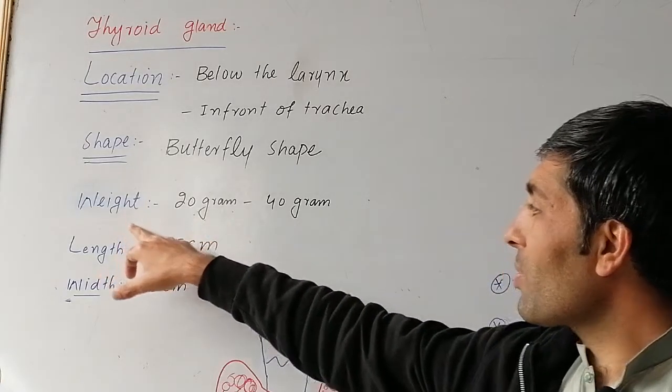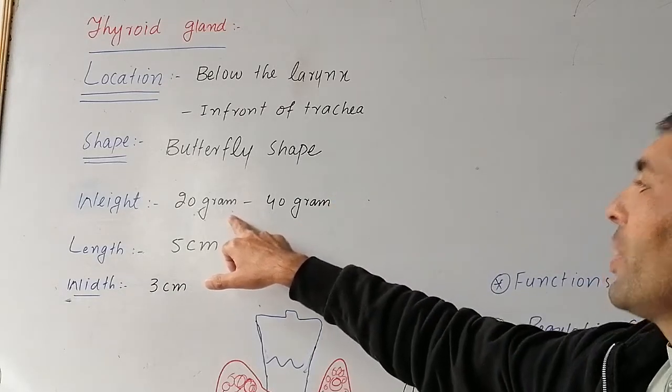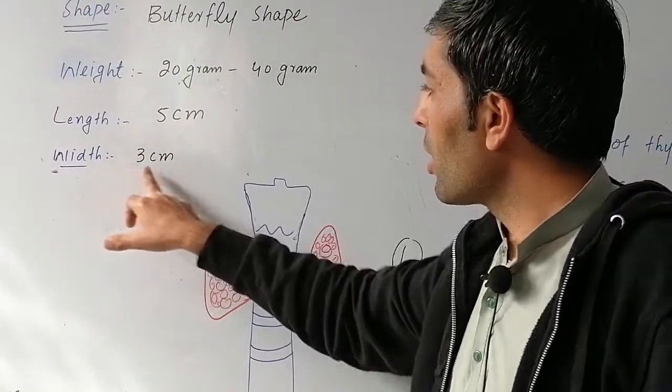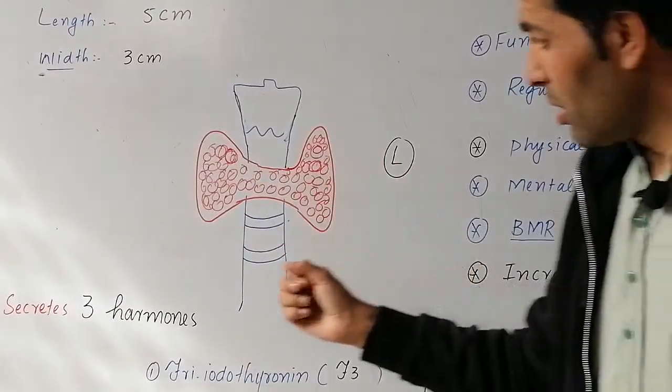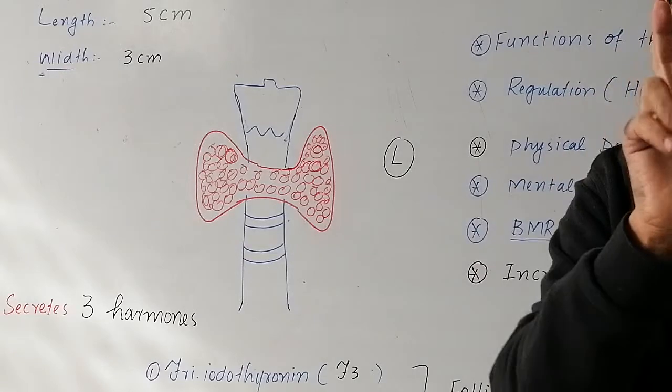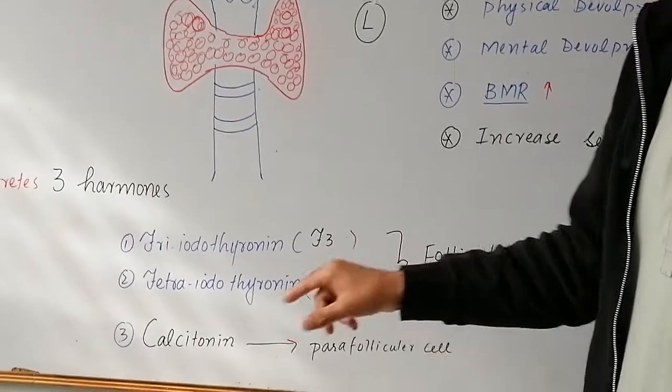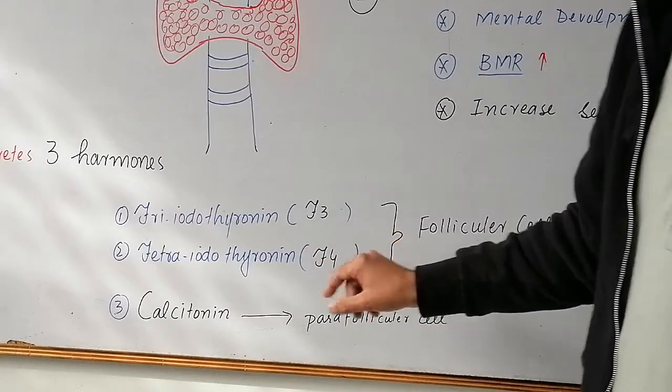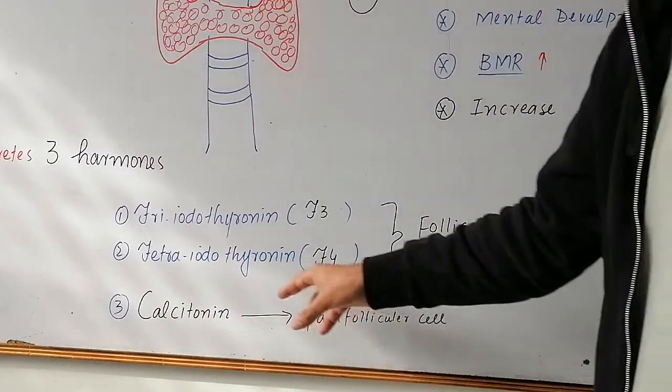The weight is 20 grams to 40 grams. Length is 5 cm, width is 3 cm. The thyroid gland secretes three main hormones. One is triiodothyronine T3, second is thyroxine T4, and the third one is calcitonin.